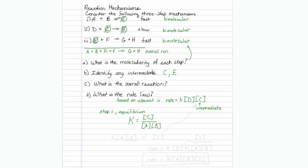So I can represent or rearrange this so that C is actually equal to some equilibrium constant times A times B. Now I have to substitute that into here.